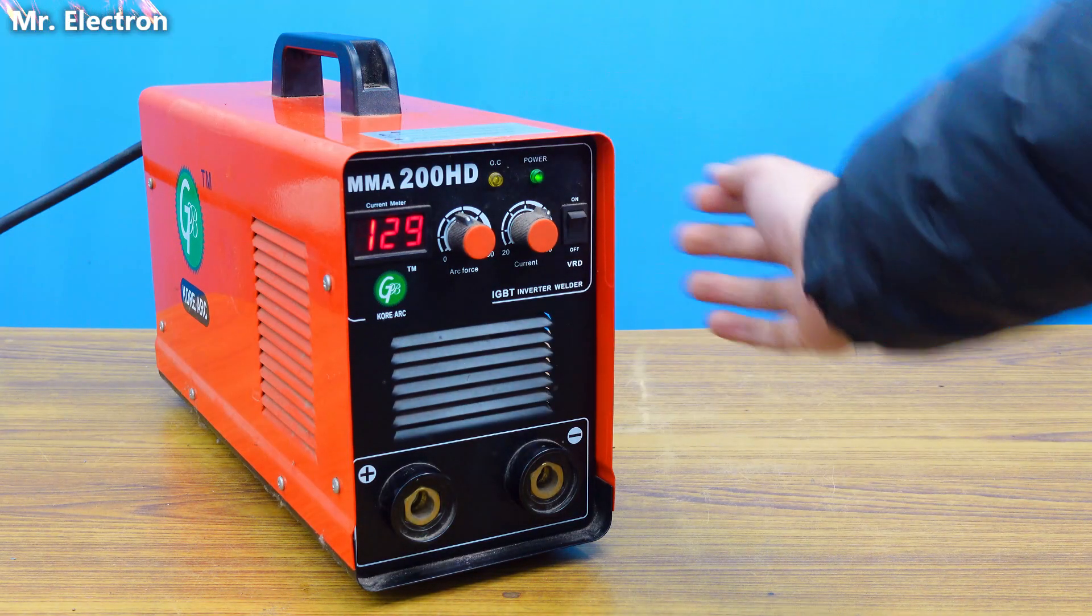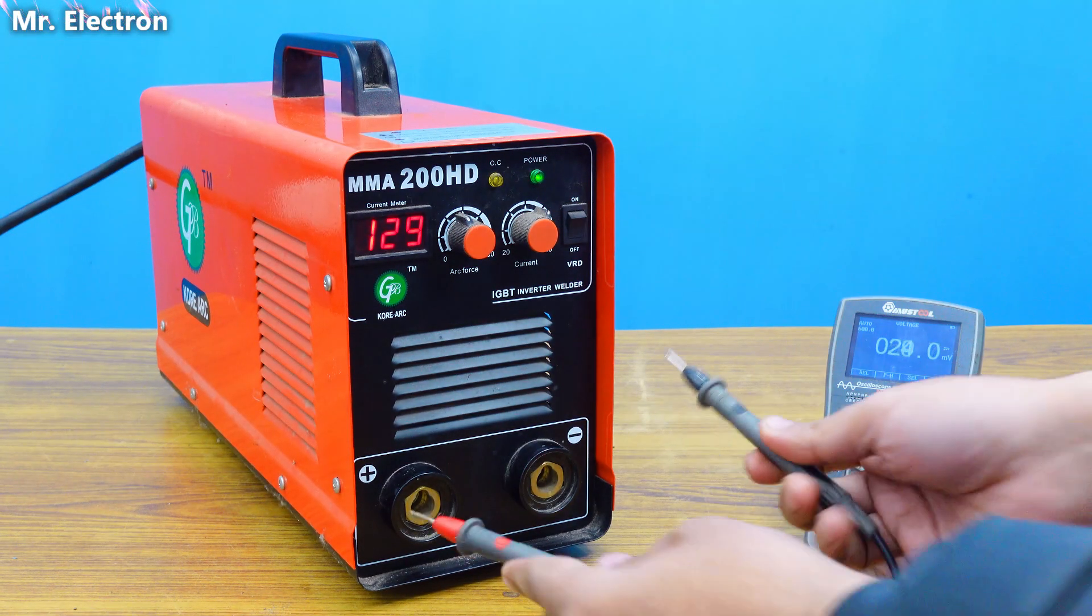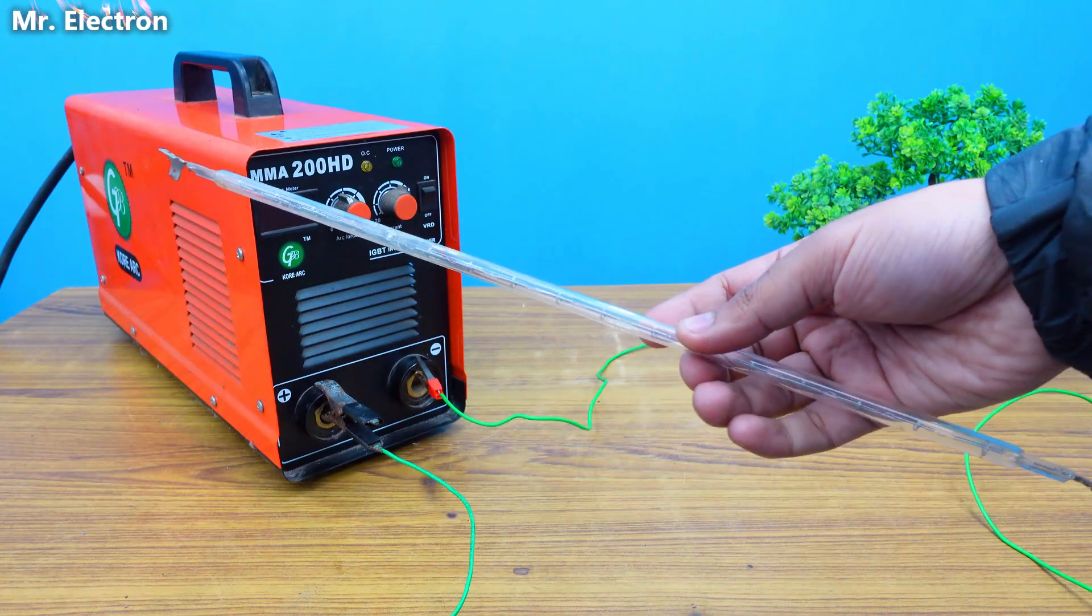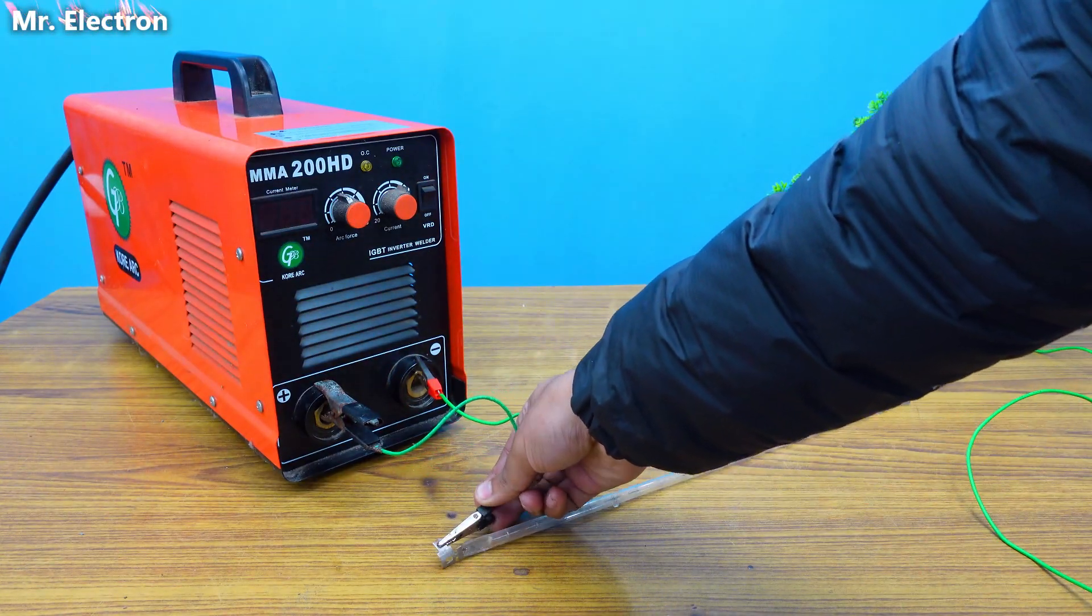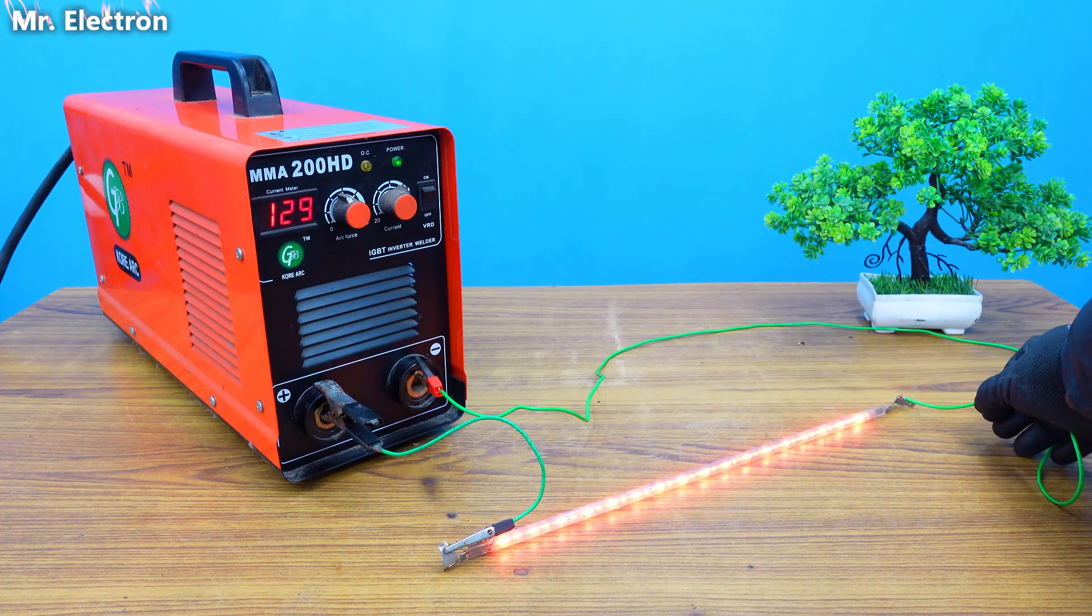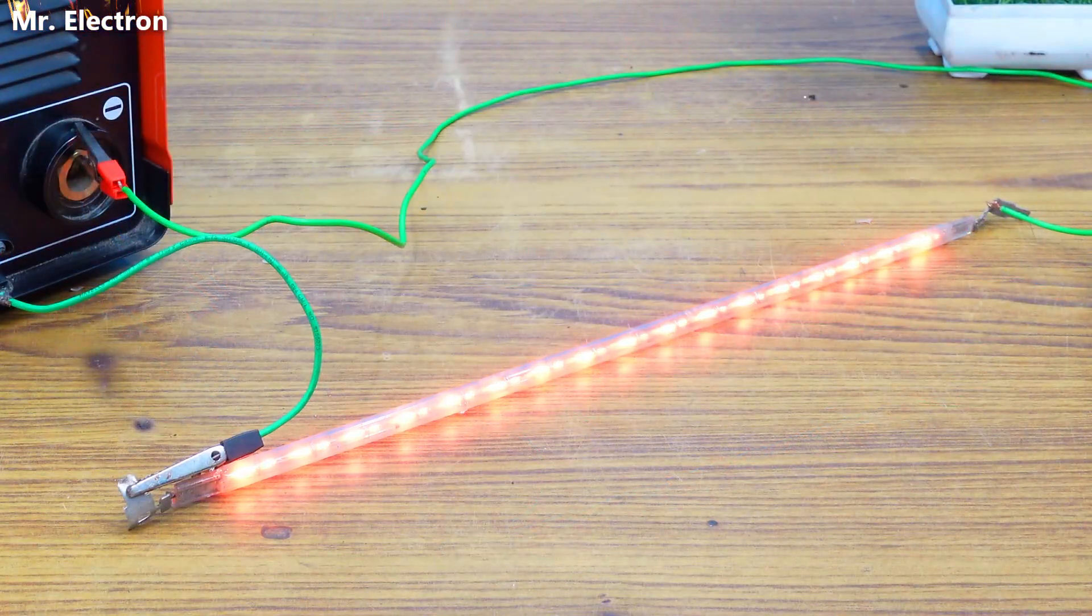This is my 200 amps welding machine. Let's measure the output voltage - it is 79 volts DC, very high and extremely dangerous. So this is my 220 volts 2000 watts incandescent bulb and you can see that it is glowing.